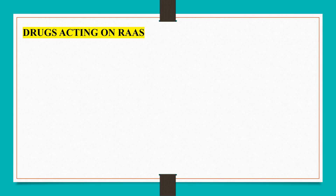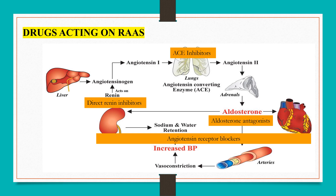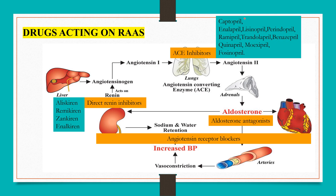Drugs acting on the renin-angiotensin-aldosterone system include direct renin inhibitors, angiotensin-converting enzyme inhibitors, aldosterone antagonists, and angiotensin receptor blockers. Direct renin inhibitors act by inhibiting renin. ACE inhibitors act by inhibiting angiotensin-converting enzyme; the drugs are captopril, enalapril, lisinopril, perindopril, ramipril, trandolapril, benazepril, fosinopril, moexipril, and quinapril. All these drugs end with the suffix '-pril'.